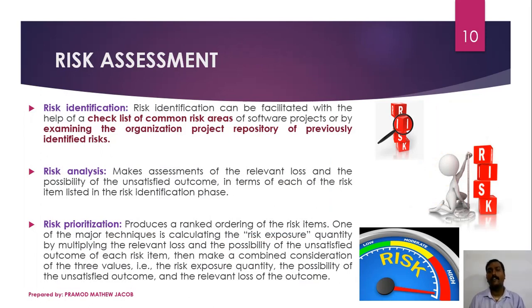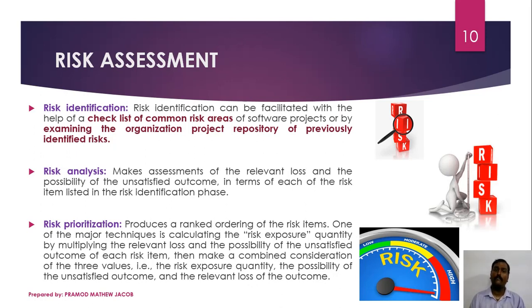We will now learn all six phases in detail. The first phase is risk identification. Identifying the risk in a software product is not an easy task. One strategy used in the software industry is to make a checklist of common risk areas of software projects, or to examine the organization's project repository of previously identified risks from past projects. Based on that, we can identify the risks associated with our particular project. There may still be some risks which are unnoticed - those left unnoticed are termed unpredictable risks, because unpredictable risks cannot be identified until they occur.